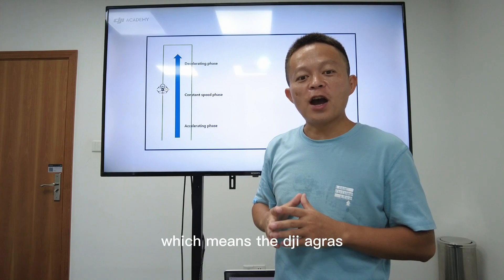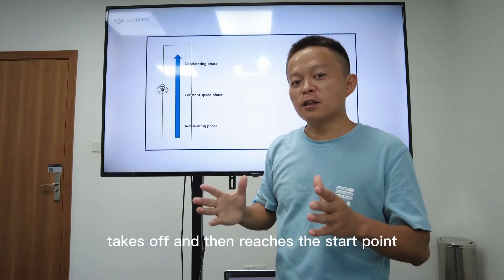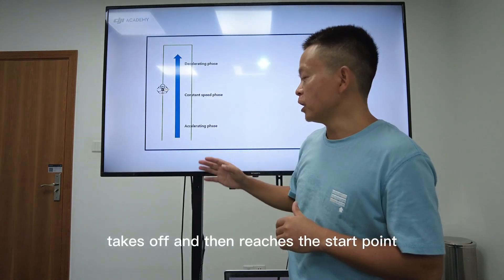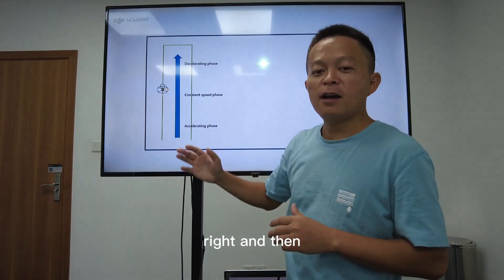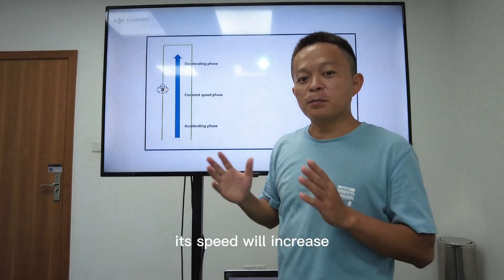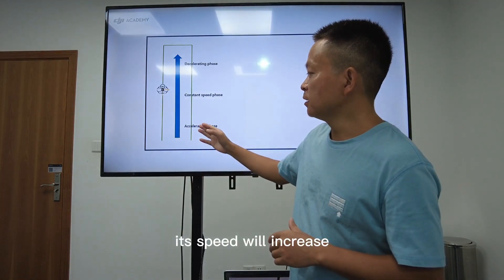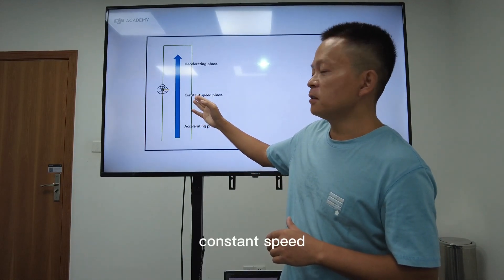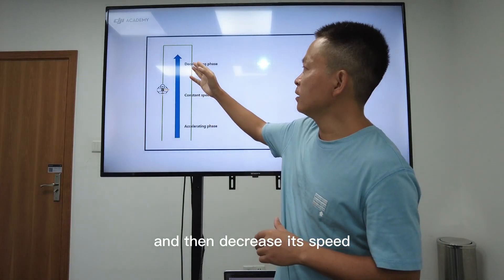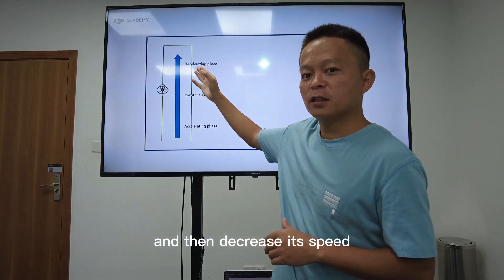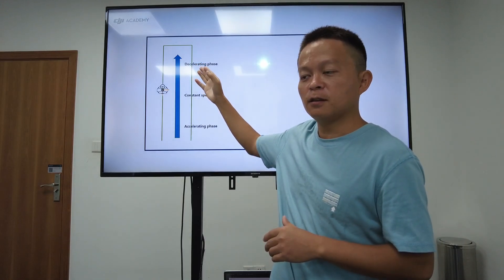Which means the DJI Agras takes off and then reaches the starting point, and then its speed will increase to constant speed, and then decrease its speed at the end of the route.